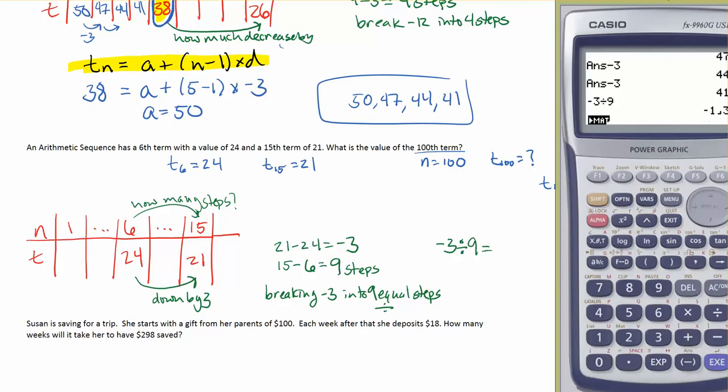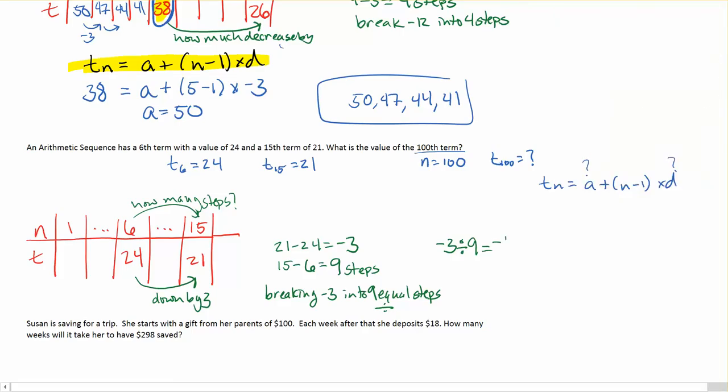So here we're breaking negative 3 into 9 equal steps. And again, you think, that's going to be division. So negative 3 divided by 9. Now if you do this in your calculator, you're going to get yourself a decimal. But if you use some rounding, it's going to be a problem. So you might think about putting it into a fraction for yourself. That's negative 1 third. So, if you write it as a fraction, it'll be more precise. And that's equal to d.